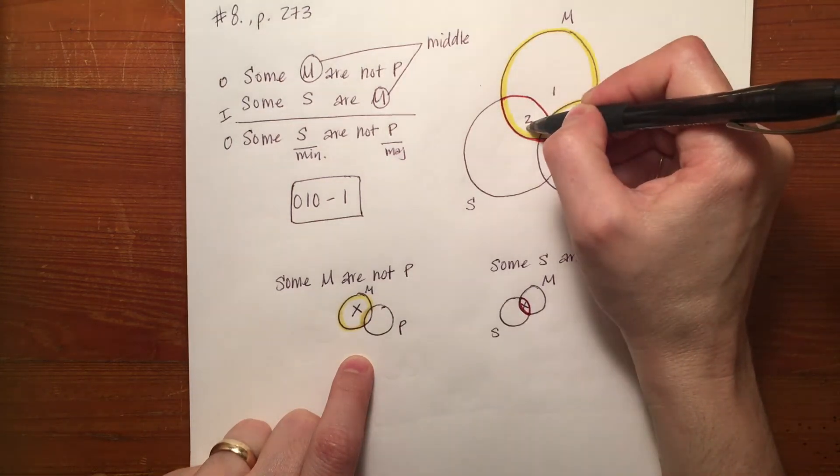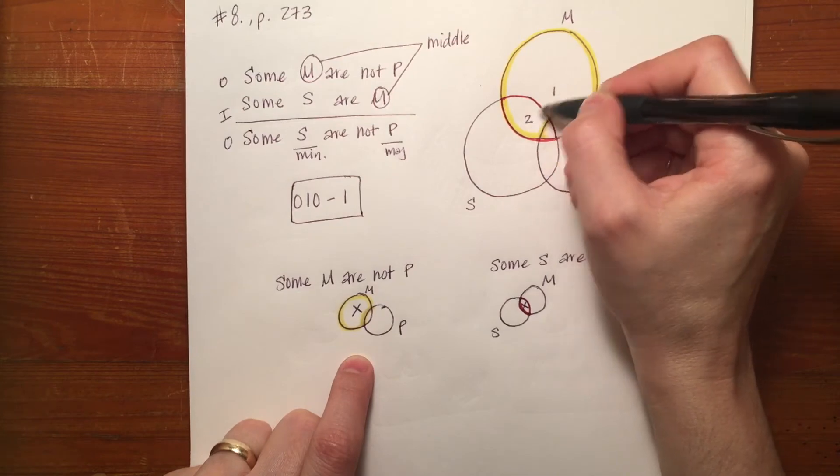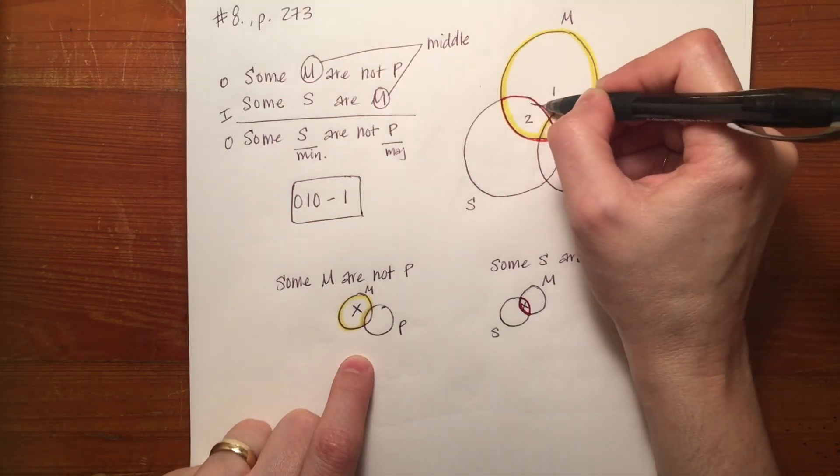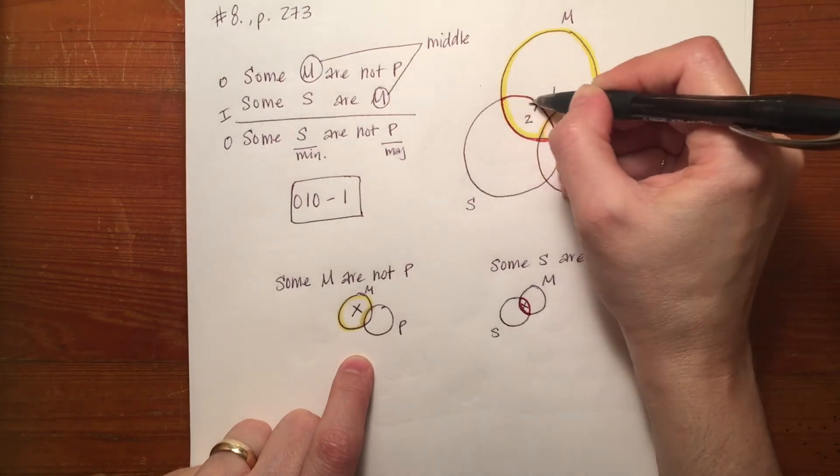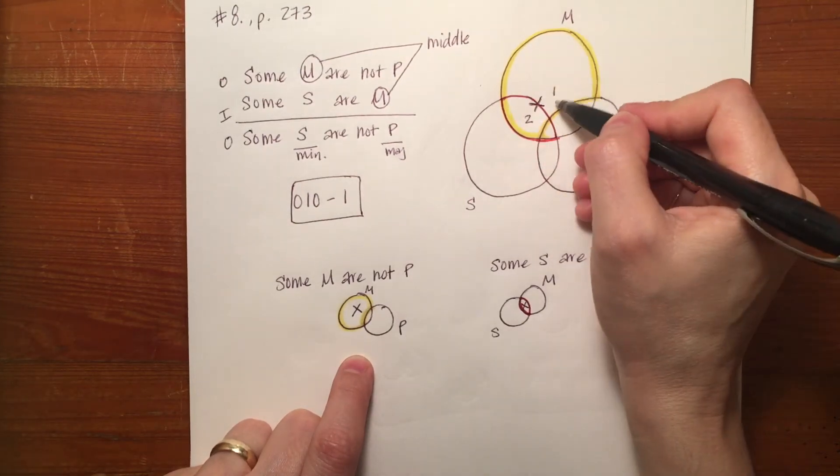Because it's made up of parts one and two and neither one are shaded, I put my X on the line that's created by the third circle